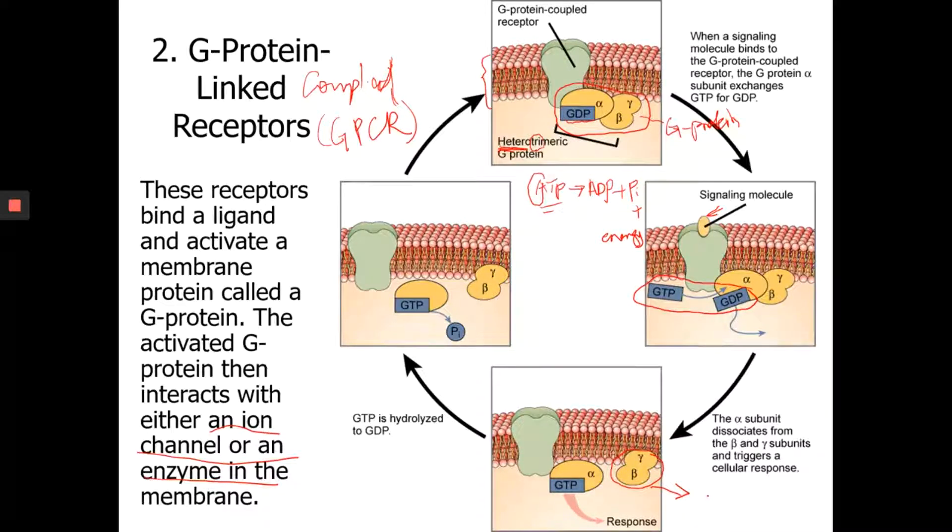Now, eventually, after the cascade of pathways, it's going to trigger a cellular response. And then this is going to be the end result of the signaling transduction pathway. Now, once that's done, then the GDP is going to hydrolyze and go back to GDP.